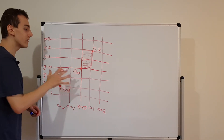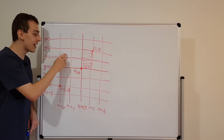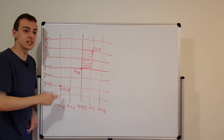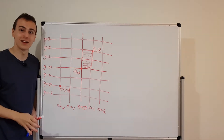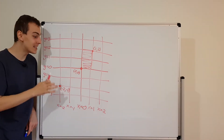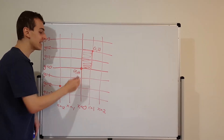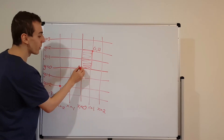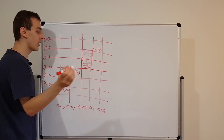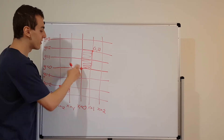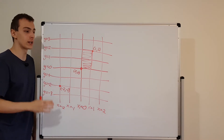The purpose of this system is to assign two values to every point on the two-dimensional plane. You can also extend this into three dimensions by adding a z-axis, which points out of the whiteboard from the origin. So this is the Cartesian coordinate system.